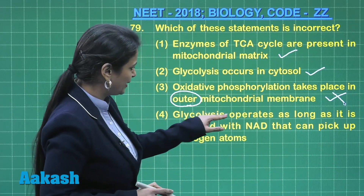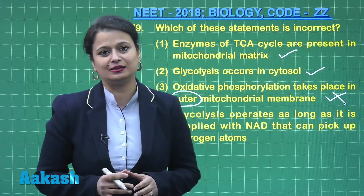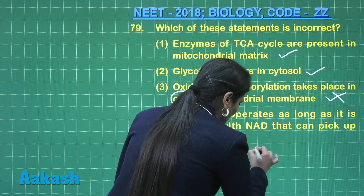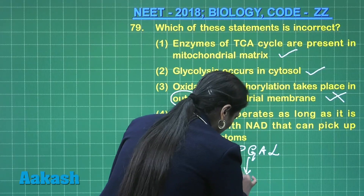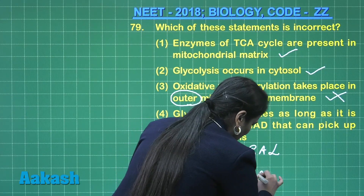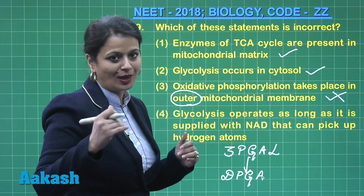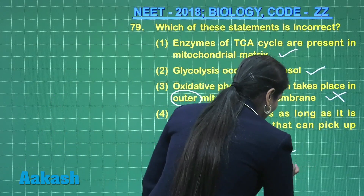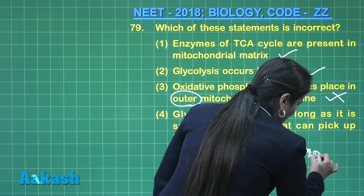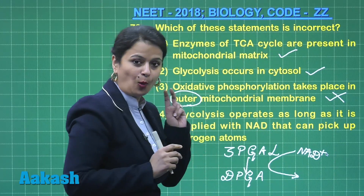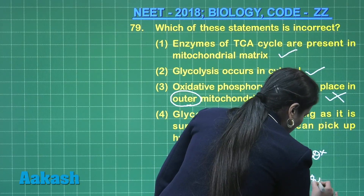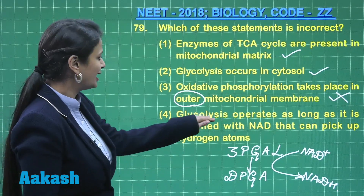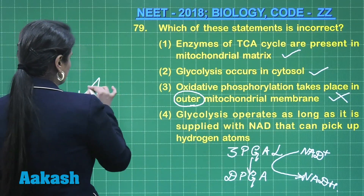Glycolysis operates as long as it is supplied with NAD — that's quite right. In glycolysis, at the step where 3-phosphoglyceraldehyde is changed into diphosphoglyceric acid, a dehydrogenation reaction occurs. Hydrogen is removed and picked up by NAD+, which accepts two electrons and one hydrogen ion, resulting in the formation of NADH. So NAD+ is very necessary for glycolysis. The correct answer for this question is option number 3.